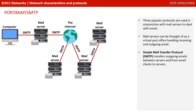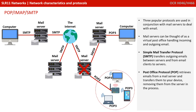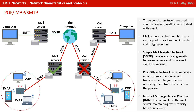Finally, we have a set of email protocols. The three most popular are used in conjunction with mail servers, which can be thought of as a virtual online post office handling incoming and outgoing mail. The Simple Mail Transfer Protocol (SMTP) transfers outgoing emails between servers and from email clients to servers. The Post Office Protocol (POP) retrieves emails from a mail server and transfers them to your device, removing the email from the server in the process. The more modern and more widely used Internet Message Access Protocol (IMAP) keeps emails on the mail server, allowing you to maintain synchronicity between different devices.